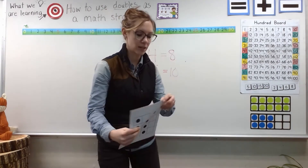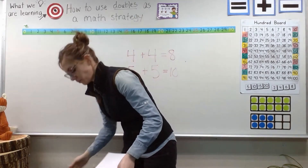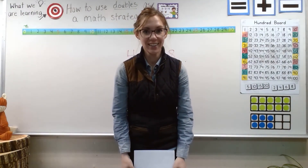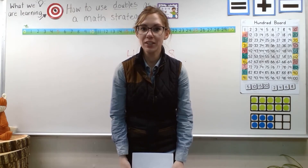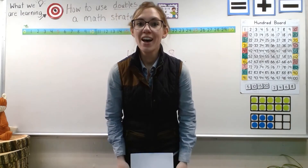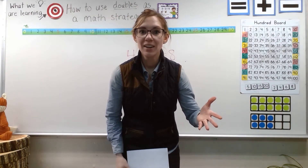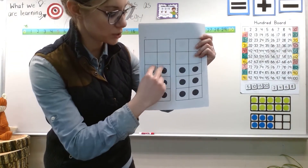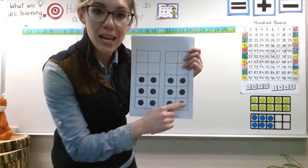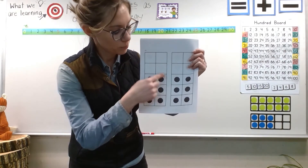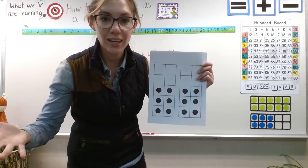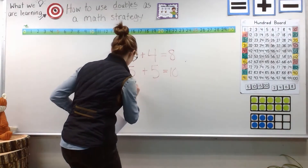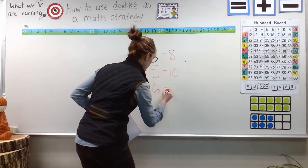Nice job, first graders. Here comes another one — it's a little bit trickier. That was pretty hard. Do you need another quick look? What did you see this time? This was a little harder and trickier, wasn't it? But you notice that there were six over here, because two, four, six — there's six in this 10 frame. And there was the same amount in the other 10 frame. So six plus six equals 12. Let's go ahead and write that as a number sentence: six plus six equals 12.